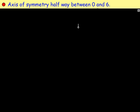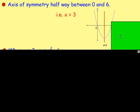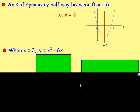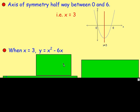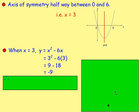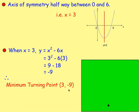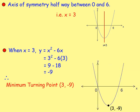For the axis of symmetry, find the midpoint between zero and six, which is three. So the axis of symmetry is x equals three. To find the turning point, substitute x equals three back into the original equation: y equals three squared minus six times three, which works out to negative nine. So there is a minimum turning point at (3, −9), as that is the lowest point on the graph.